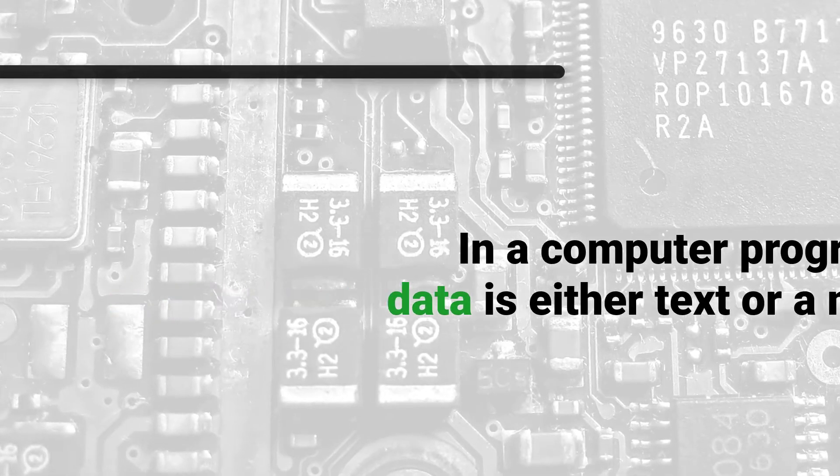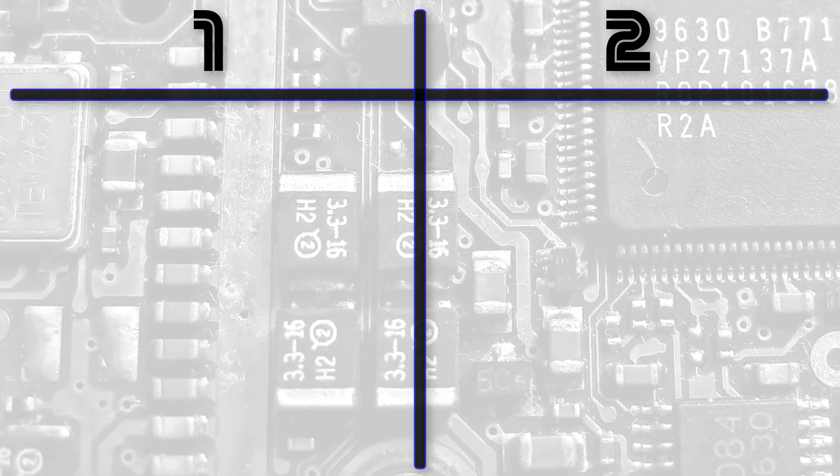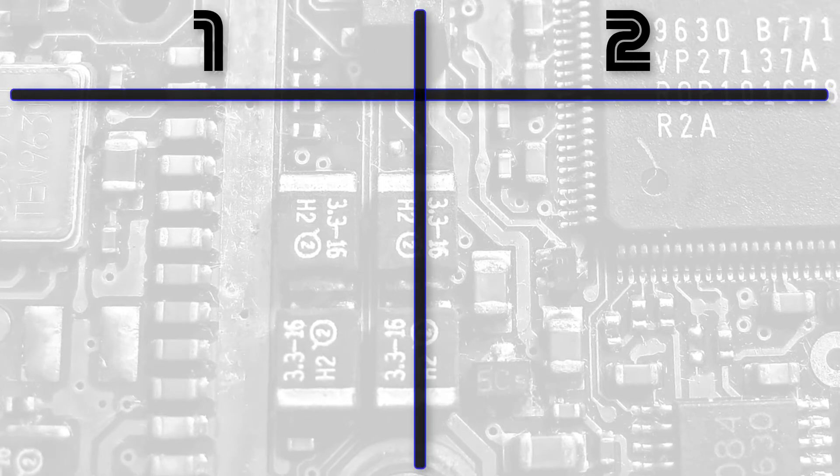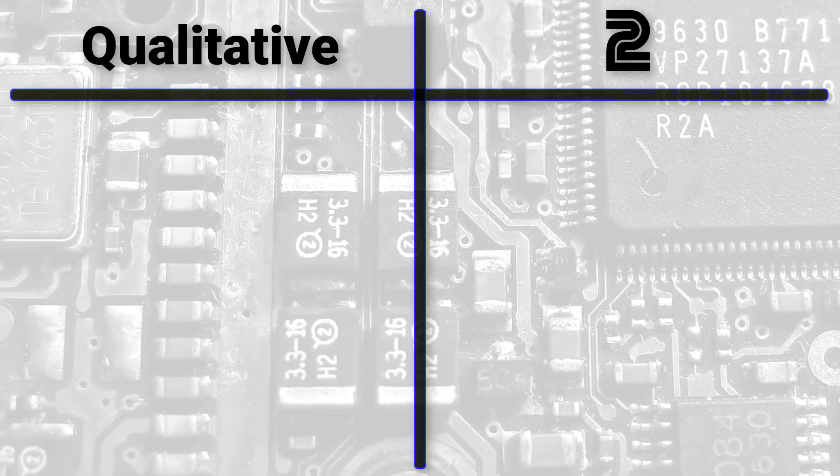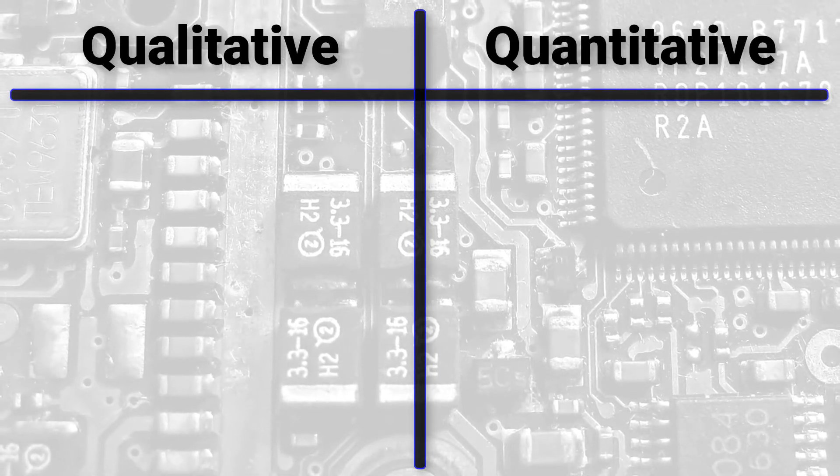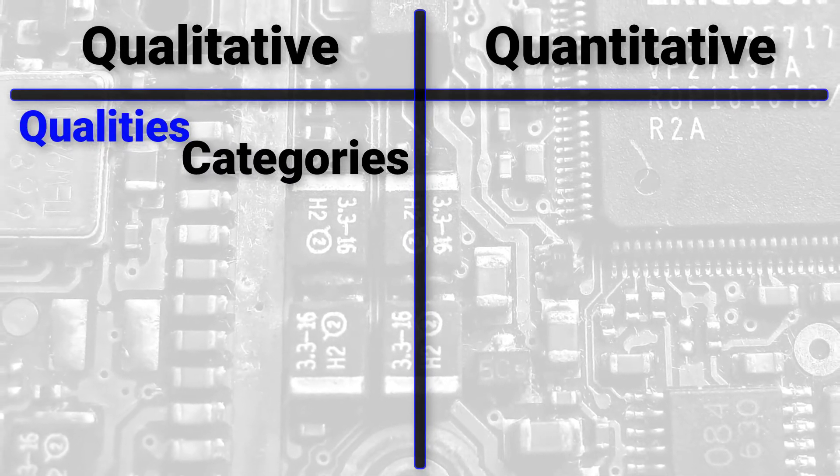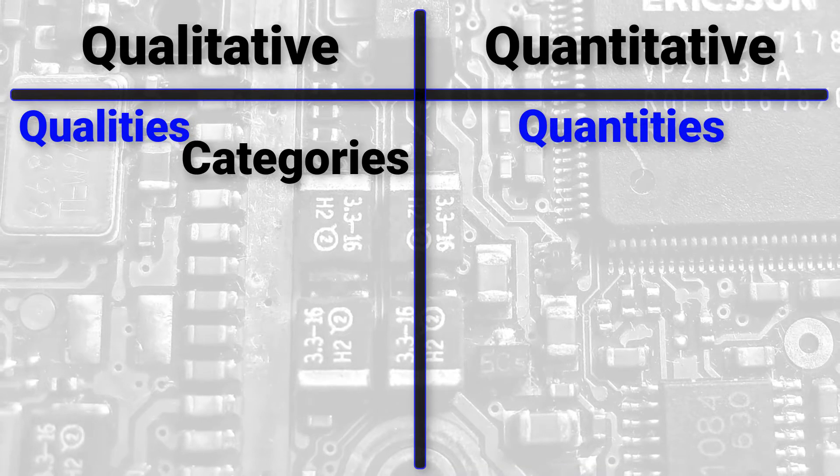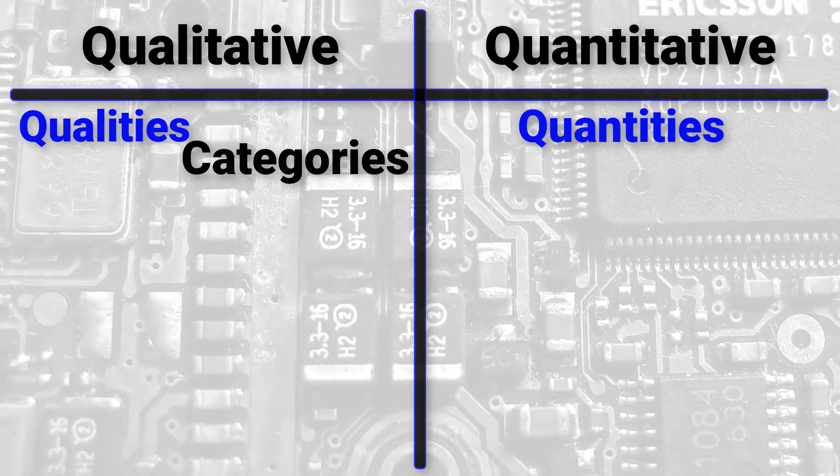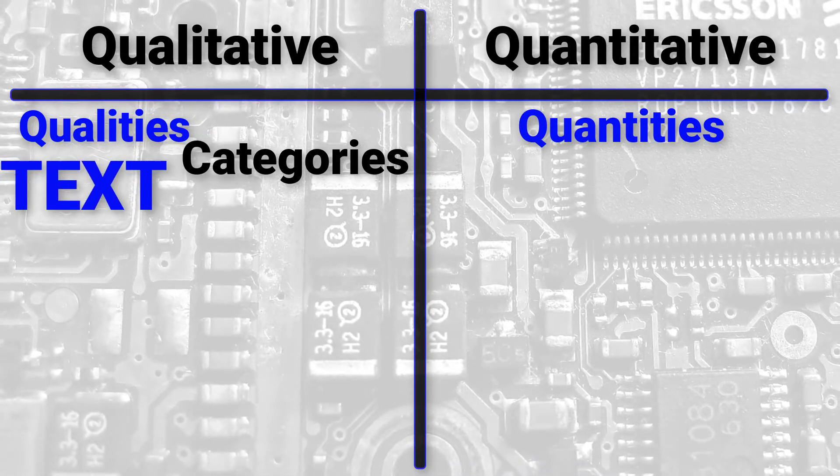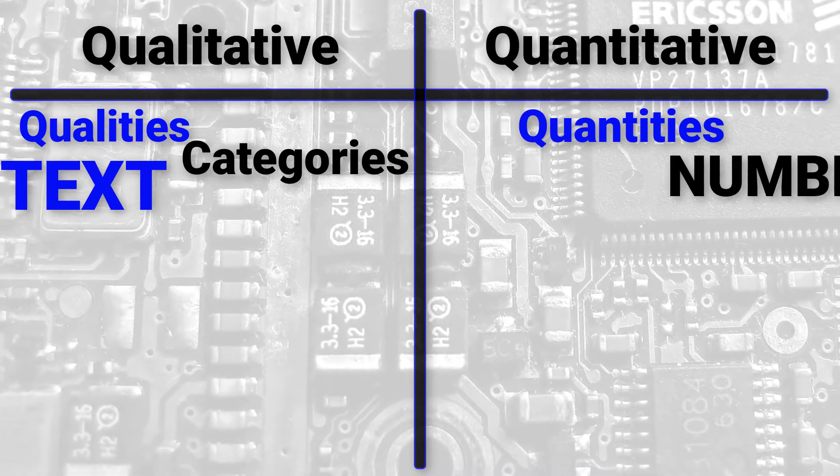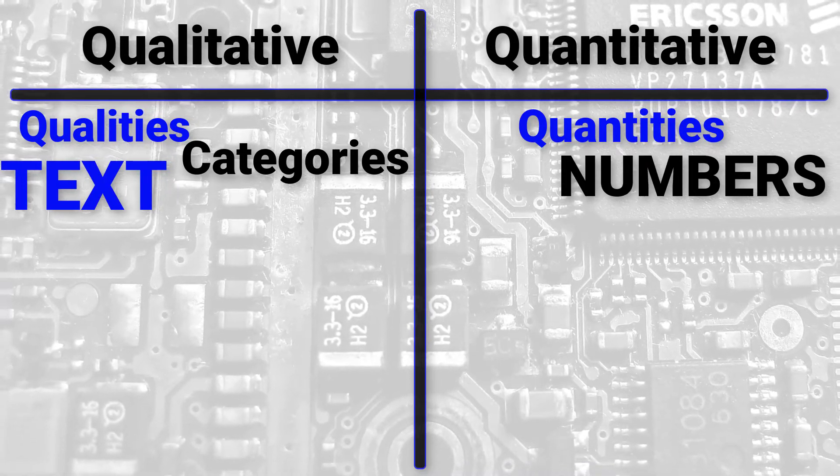Let's look more specifically at how data is used to represent the world. There are two relevant categories that describe how this is done: we have qualitative data and quantitative data. Qualitative data allows us to represent qualities or categories, and quantitative data allows us to represent quantities. We use qualitative data to describe the world with text and we use quantitative data to measure the world with numbers.